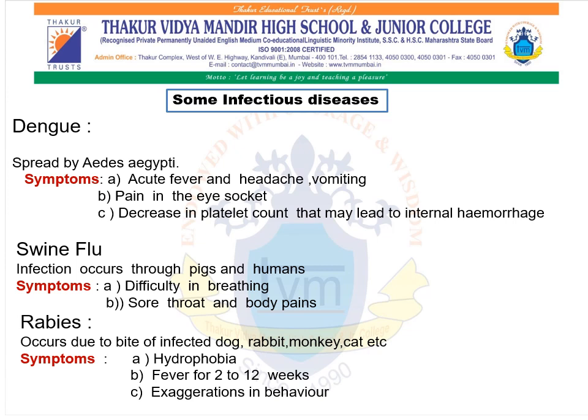Now we are going to study about some infectious diseases. The first infectious disease we are going to study is dengue. Different species of mosquitoes spread different diseases. These mosquitoes generally lay eggs in waterlogged areas, giving rise to an increase in their population. Dengue is spread by a species of mosquito, that is Aedes aegypti. The symptoms of dengue are acute fever, headache, vomiting, pain in the eye socket, and decrease in the platelet count that may lead to internal hemorrhage.